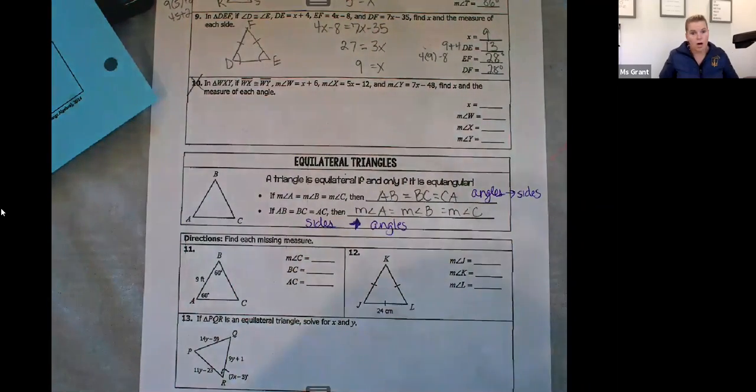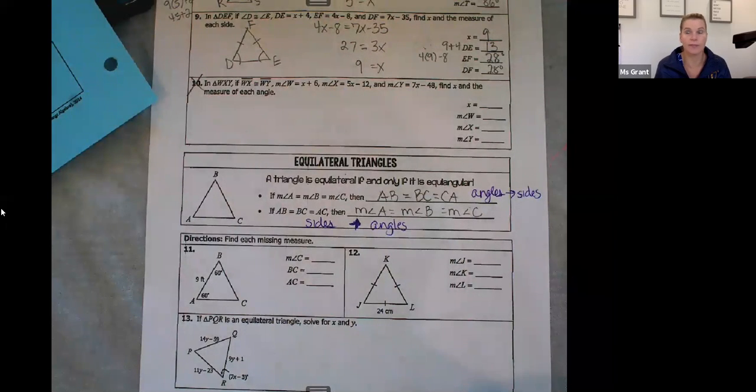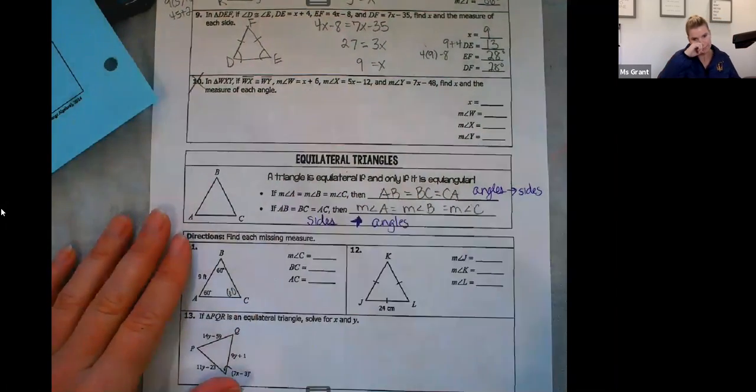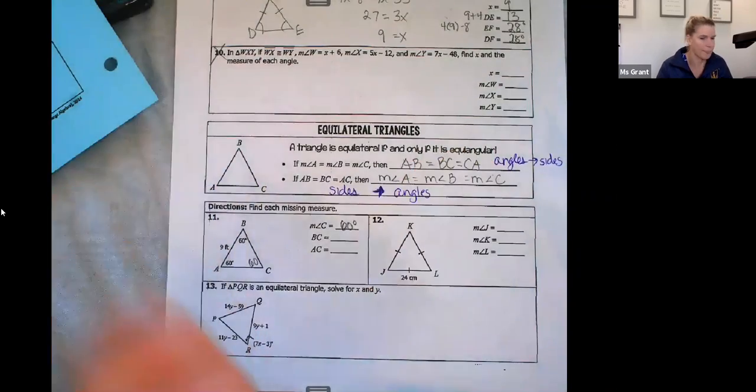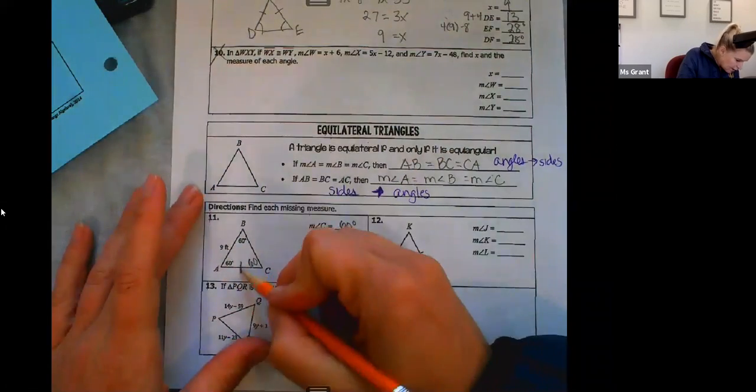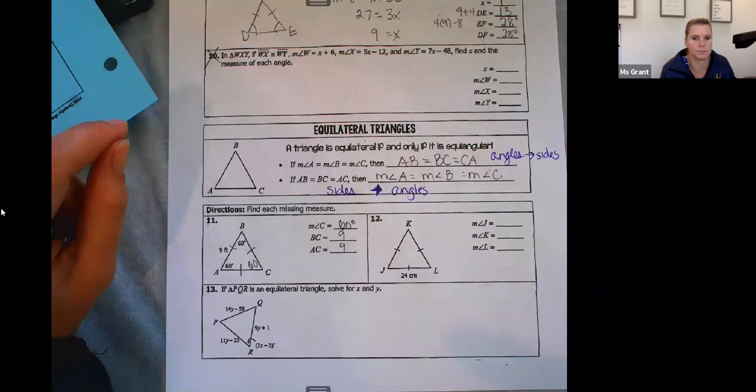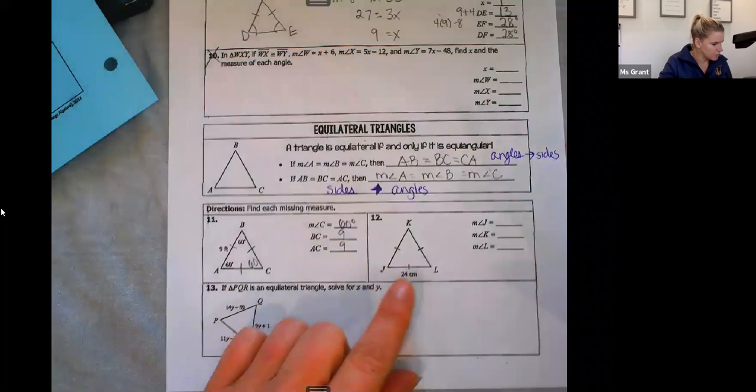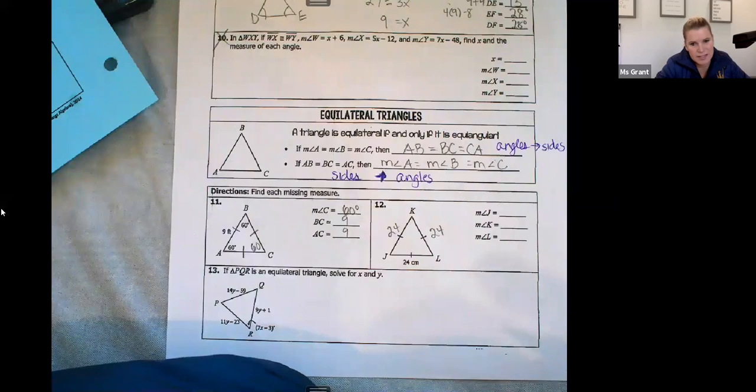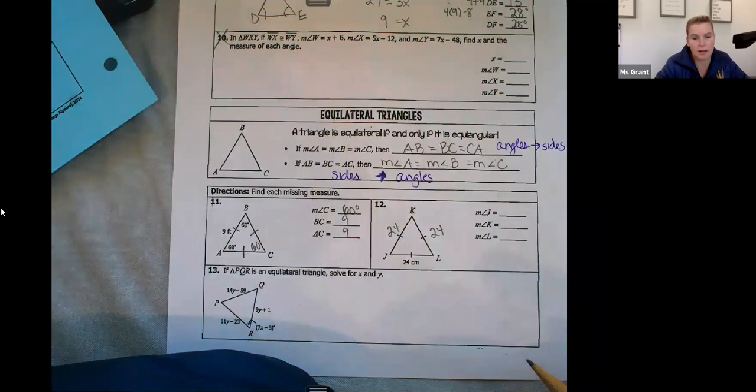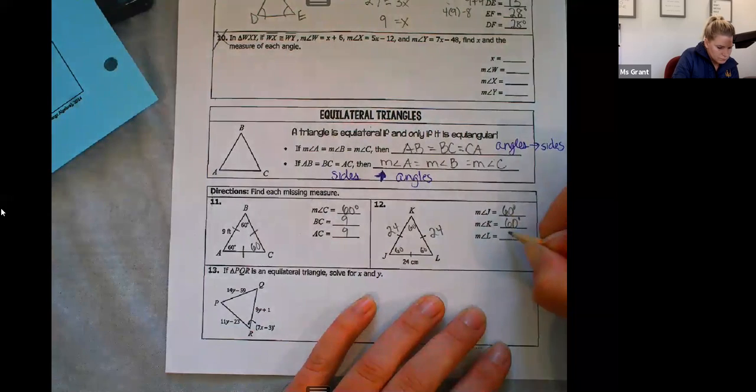So 11, 12, and 13 are going to be like, well, everything's equal. When I have three angles in a triangle and all of the angles are equal, all of the angles are 60 degrees. 60, 60, 60. So that means that on number 11, the measure of angle C is 60 degrees. And if one of the sides is nine, all of the sides are nine. Easy, easy. On number 12, all the sides must be 24, right? They didn't even ask us what the sides were. They want to know what the angles are. J and K and L. They're all 60.